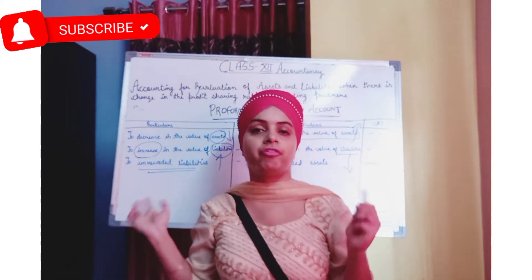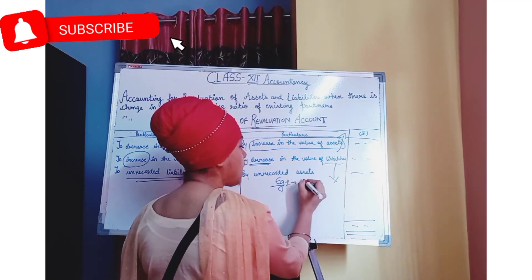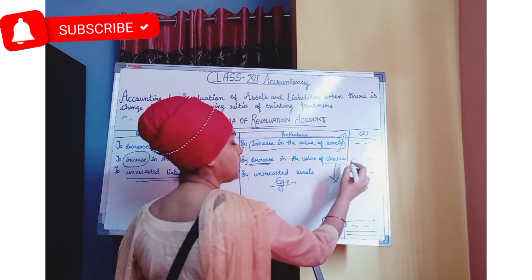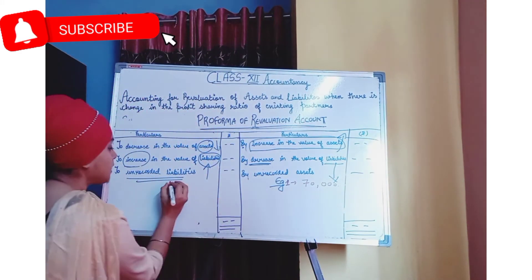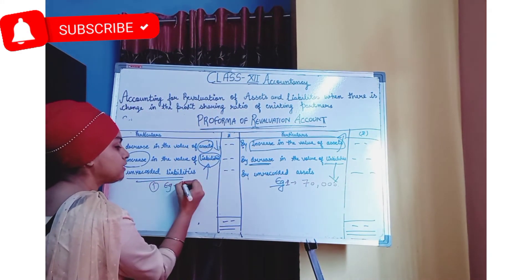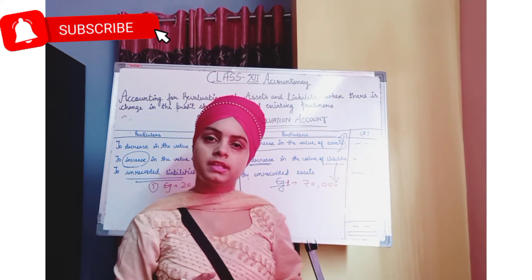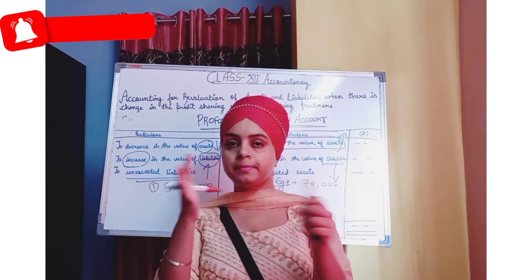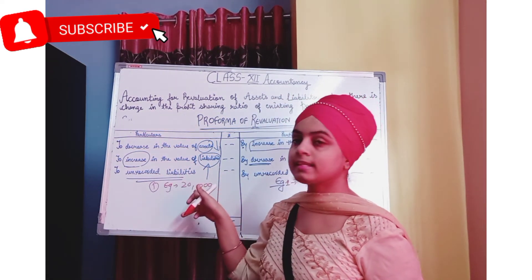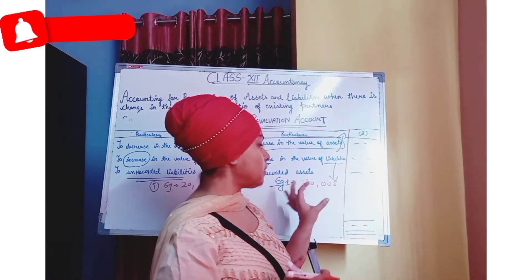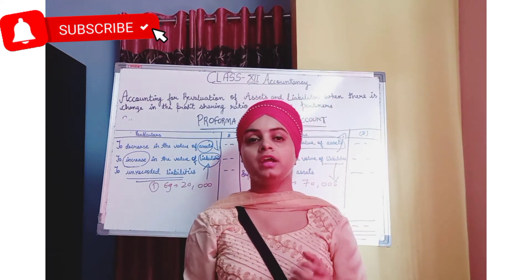Let me explain with an example. Suppose the total on the credit side is 70,000 and the total on the debit side is 20,000. If I have 70,000 in gains and 20,000 in expenses, then my profit is 50,000.